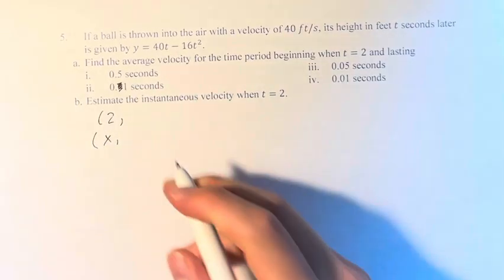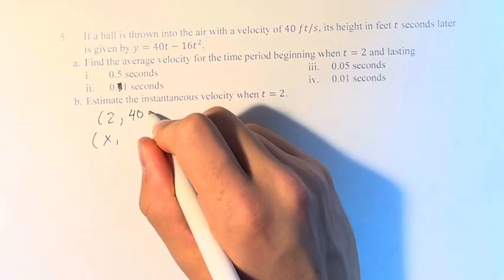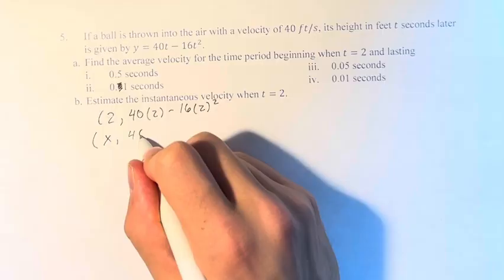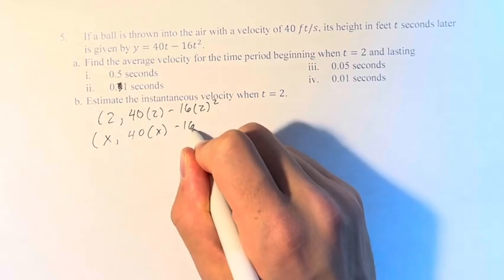And what are the y values of these points? Well, it's going to be 40 times 2 minus 16 times 2 squared and 40 times x minus 16 times x squared.